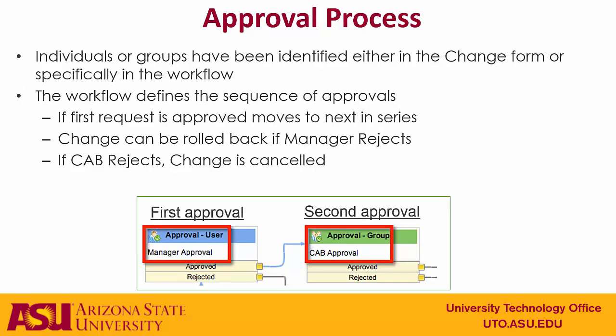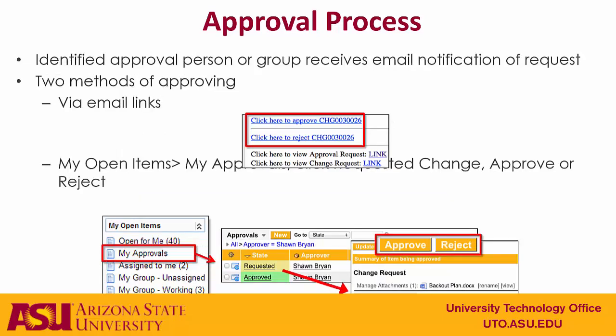The approval process we talked about in the workflow can be seen by clicking on the workflow link. If a manager rejects the change, it will go back into draft state and you as the initiator can make changes. If the CAB rejects the change, then it gets canceled and you'll have to create a new change request. If you're an approver, you'll get an email where you can go in and view the change, as well as approve or reject it. If you're in ServiceNow, you can go to the My Open Items application and look at the My Approvals list and do your approval or rejection from there.